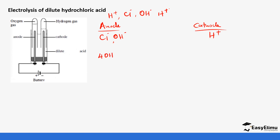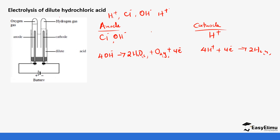So the anode equation: four hydroxide ions give two molecules of water plus oxygen gas plus four electrons. These four electrons travel to the cathode where hydrogen ions gain them. Four hydrogen ions plus four electrons give two molecules of hydrogen gas. In the same manner, more hydrogen gas is going to be produced and less oxygen is going to be produced. As the experiment progresses, the concentration of the acid increases progressively.